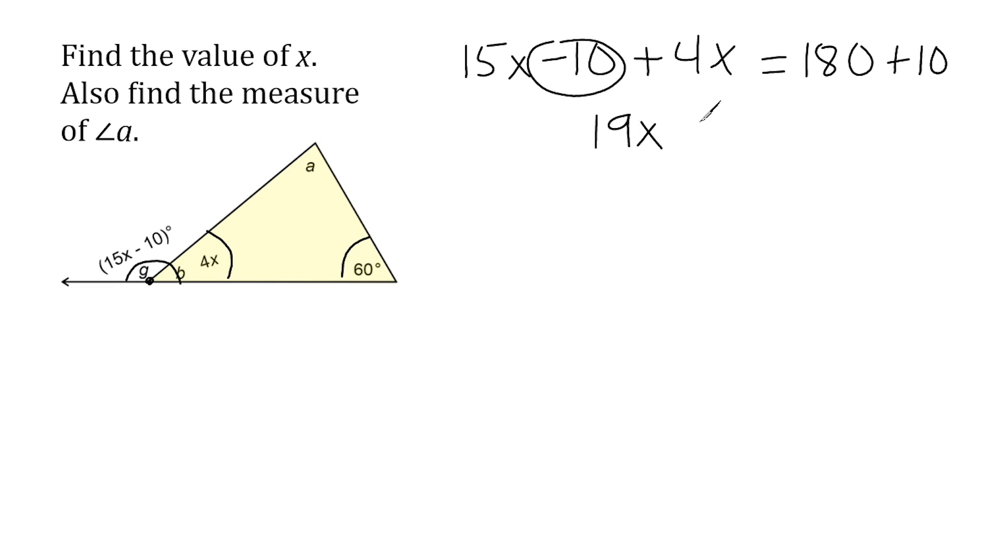So, we're going to take 19x and set that equal to this sum, which is 190. Next, we divide both sides by the coefficient of 19 and that is going to give us a value of x is equal to 10.